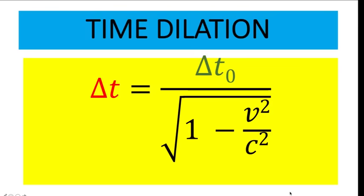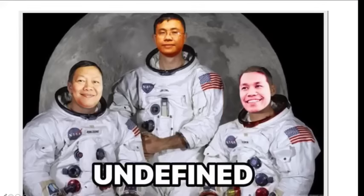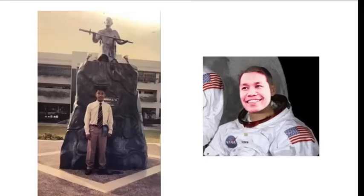Let's talk about time dilation. The formula on your screen is the formula for time dilation. This formula looks complicated, so let's explain this using a scenario. Let's say there are twin brothers — both of them dream of becoming astronauts. Together with their other friend, they all pursue their dreams, but only one of them became an astronaut, the other became a mathematics teacher, and the other became a famous DJ.